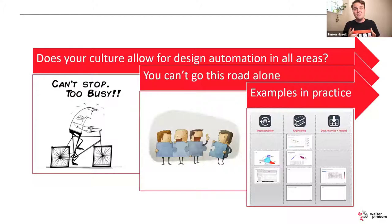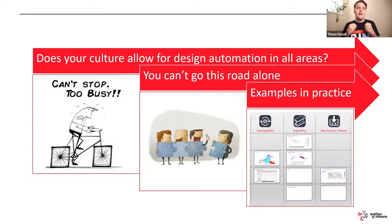Today I'll cover three parts: my introduction, and then examples in practice. First: does your culture allow for design automation? At Walter P Moore we follow lean practices and Six Sigma — the idea that anybody can raise up and say 'the way we're doing this doesn't work.' It doesn't matter if they're at senior leadership or junior level; everyone is taught to really listen to that.